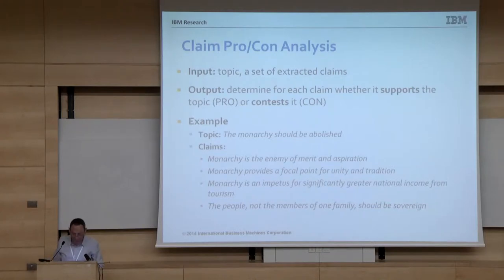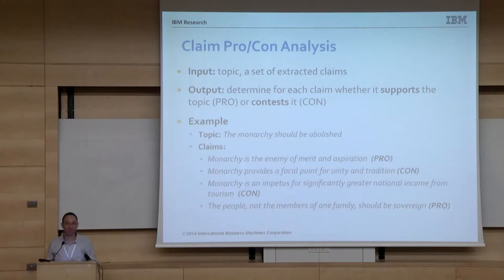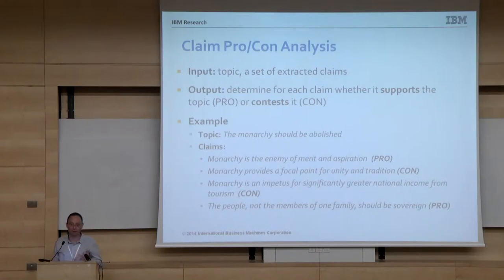Here are the answers. The first claim, 'monarchy is the enemy of merit and aspiration,' clearly supports the idea that the monarchy should be abolished — so it's a pro claim. The next one, 'monarchy provides a focal point for unity and tradition,' is favorable of the monarchy, so it's a con claim.